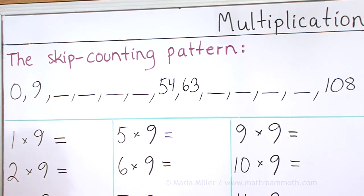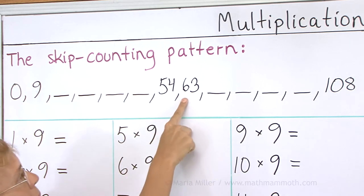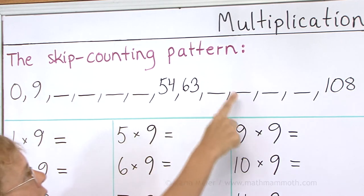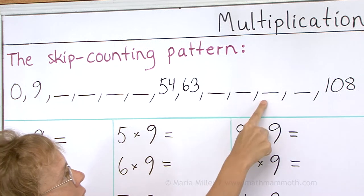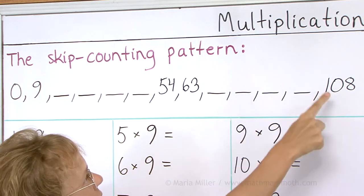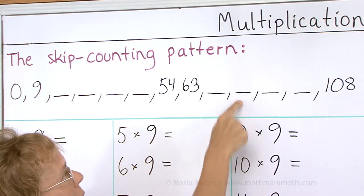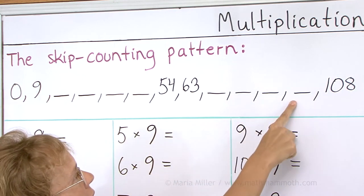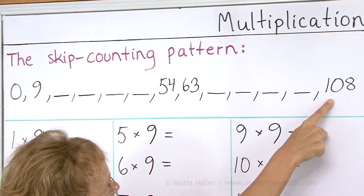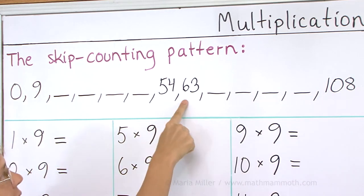And then the latter half starting with 63, 72, 81, 90, 99, and 108. 63, 72, 81, 90, 99, 108. 63. Your turn. 60, 63.